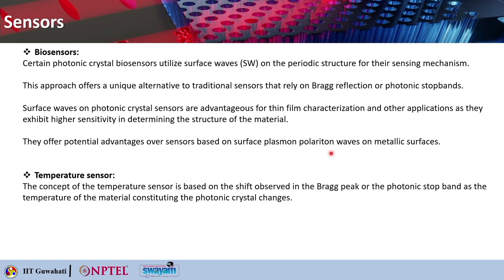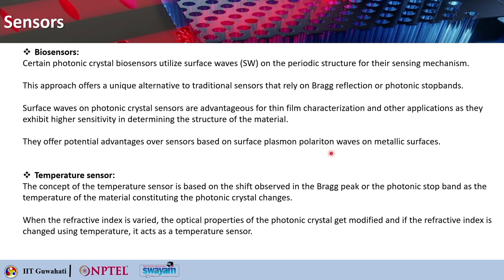Photonic crystals can also be used as temperature sensors. The concept is based on the shift in the Bragg peak wavelength or the photonic stop band as the temperature of the material constituting the photonic crystal changes. Because of the temperature change, the refractive index changes, which alters the optical property of the photonic crystal. So if the refractive index is changed due to an external stimulus like temperature, it acts as a temperature sensor.